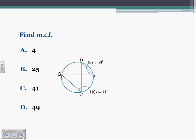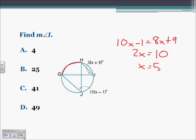Find the measure of angle I. Angle I intercepts arc GH. Angle J also intercepts arc GH, so those two angles must be equal. Set 10x minus 1 equal to 8x plus 9. Combining like terms gives 2x equals 10, so x equals 5. Angle I equals 8 times 5 plus 9, so the measure of angle I is 49 degrees, which is answer D.